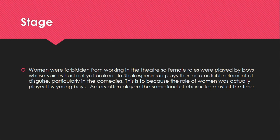Another feature of Elizabethan theater is that women were forbidden from working in the theater. All female roles on the Elizabethan stage were done by boys whose voices had not yet broken. In Shakespearean plays we can see the element of disguise, particularly in comedies — that is partly because women's costumes were too much to handle for these young boys. In most comedies female characters at one point or another are disguising themselves as boys within the play. So they were really young boys playing women playing young boys, resulting in much confusion of identity.